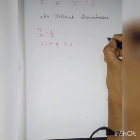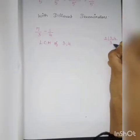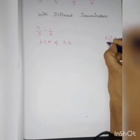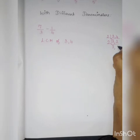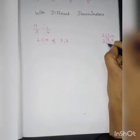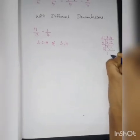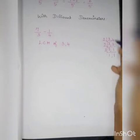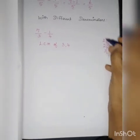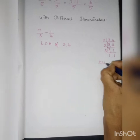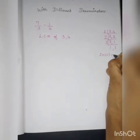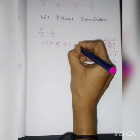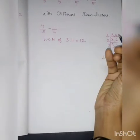Finding LCM of 3 and 4: In the 2 times table, 3 won't come, so I write 3 as such. Two 2s are 4. In the 2 times table again, 3 won't come; two 1s are 2. Then in the 3rd table: three 1s are 3. Now I multiply the factors: 2 into 2 into 3 — two 2s are 4, four 3s are 12. So the LCM of 3 and 4 is 12.